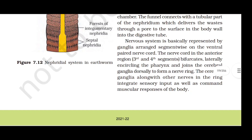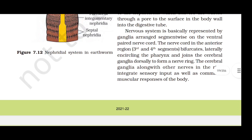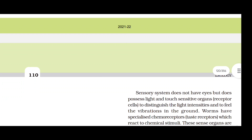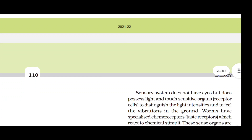The nervous system is represented by ganglia arranged segment-wise on the ventral paired nerve cord. In the anterior region (3rd and 4th segments), the nerve cord bifurcates, encircling the pharynx and joining the cerebral ganglia dorsally to form a nerve ring. The cerebral ganglia integrate sensory input and command muscular responses. Earthworms do not have eyes but possess light- and touch-sensitive organs, chemoreceptors and taste receptors located on the anterior part of the worm.